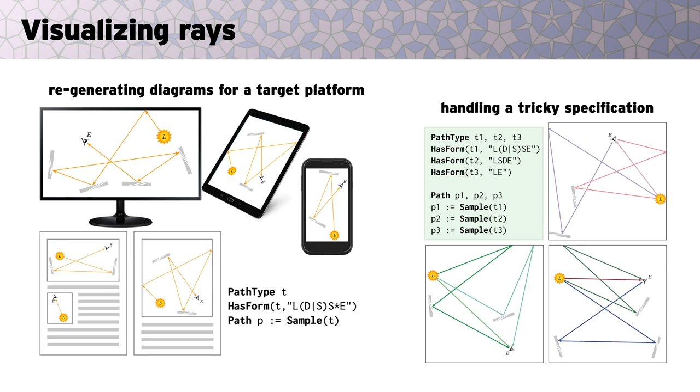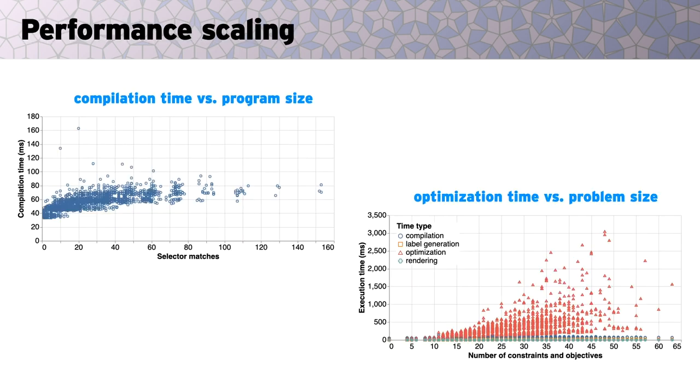Although we generated these paths in style, a cool thing you can easily do is call out to an external ray tracer. We also did some basic performance evaluation, showing that our system appears to scale well with program size. The main bottleneck is optimizing diagrams with a large number of constraints and objectives, but even here most diagrams are on the order of tens of seconds, and there seem to be many opportunities for improvement.